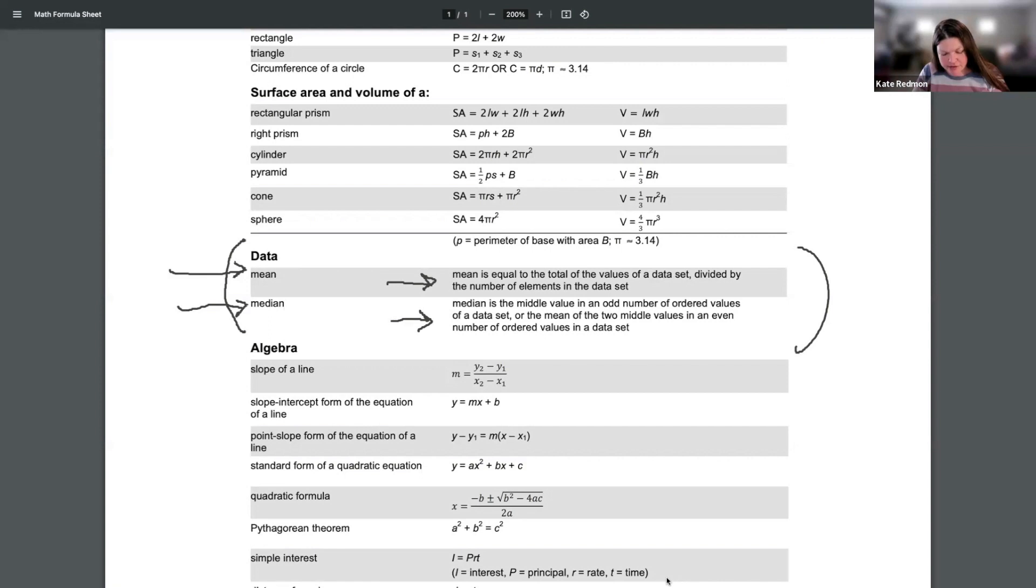Now I have good and bad news. I do not believe you're going to have this formula sheet if you have a mean or a median problem on the science or the social studies. This formula sheet is what you get while you're taking the math test. But that being said, just doing these examples with these directions a few times might be all you need so that you're prepared when it comes up on those other tests as well.